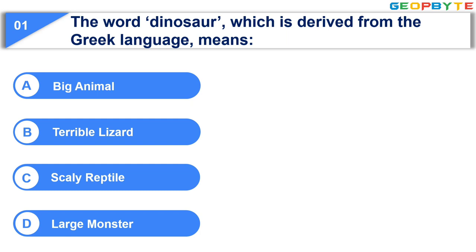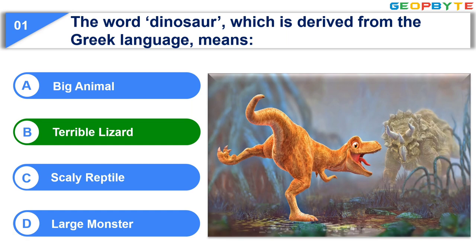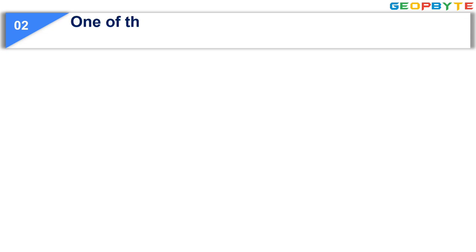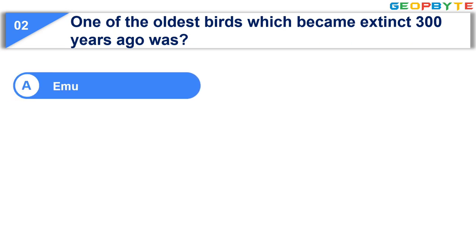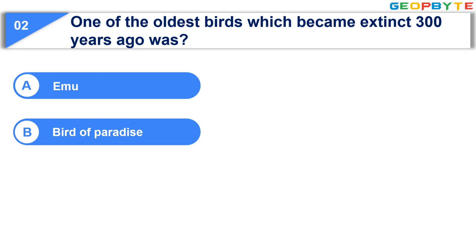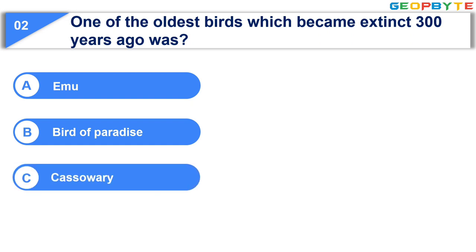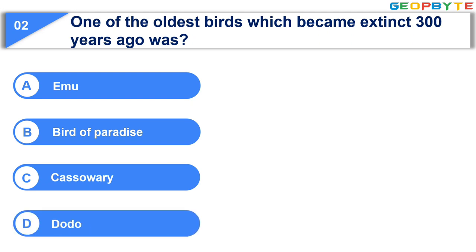Your time is up and the correct answer is Option B: Terrible lizard. The next question is: One of the oldest birds which became extinct 300 years ago was — Option A: Emu. Option B: Bird of Paradise. Option C: Cassowary. Option D: Dodo. Your time starts now!